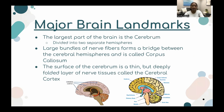Starting off with the cerebrum, the largest part of the brain, which is divided into two separate hemispheres — the left and the right. The left and right hemispheres are connected by the corpus callosum, which is a large bundle of nerve fibers that ensures both sides of the brain can communicate with each other. The surface of the cerebrum is a thin but deeply folded layer of nerve tissue called the cerebral cortex.